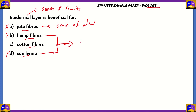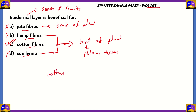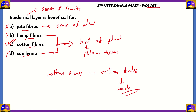Bast is what we call phloem tissue in botany. Therefore the only correct option is option C: cotton fibers. Cotton fibers are taken from cotton balls, which originate from seeds, and seeds do have an epidermal layer. So the epidermal layer is beneficial for cotton fibers, making option C the correct answer.